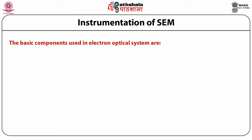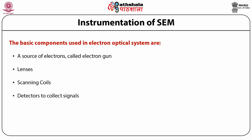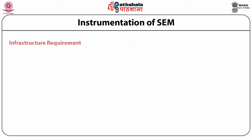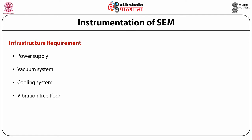The basic components used in the electron optical system are: number 1, a source of electrons called the electron gun; number 2, lenses; number 3, scanning coils; detectors to collect the signals; sample stage; and display or data output devices. The infrastructure requirements are: power supply, a vacuum system, cooling system, vibration-free floor, and a room free of ambient electrical and magnetic fields.